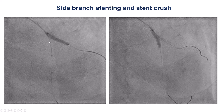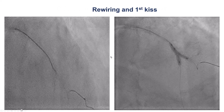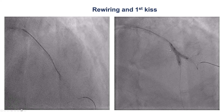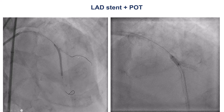We decided to stent the LAD using a two-stent technique because of the areas of dissection. The best approach was to use the DK crush technique because we maintain wire position into the main vessel throughout the procedure. We stented the diagonal, then crushed the part of the diagonal stent protruding into the LAD. We rewired the diagonal branch and did the first kissing balloon inflation. Then we placed the stent into the LAD, jailing the diagonal branch.